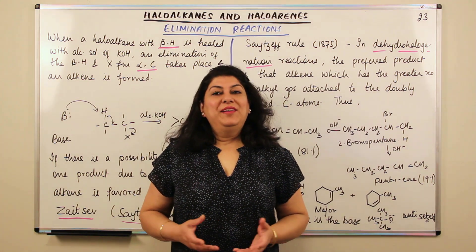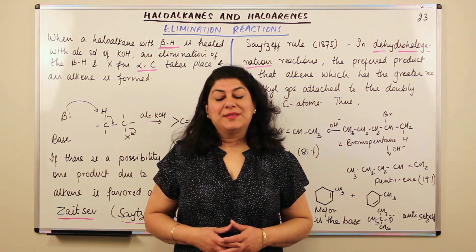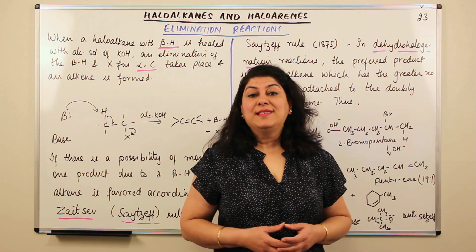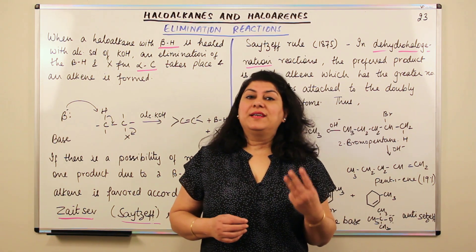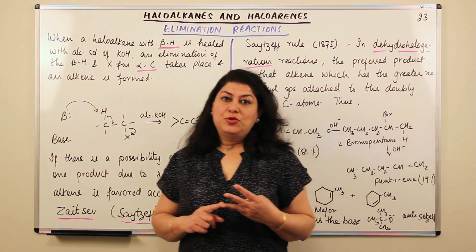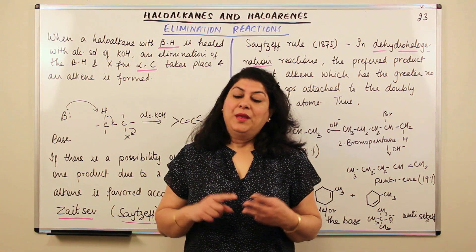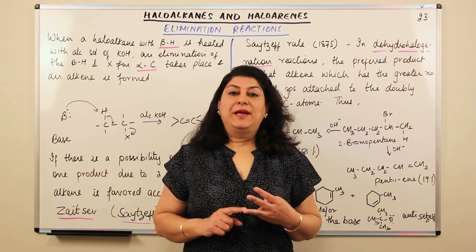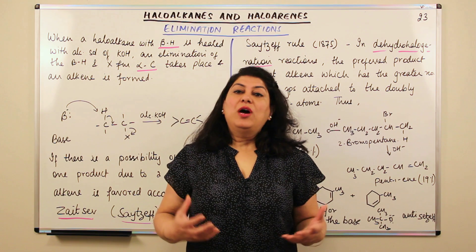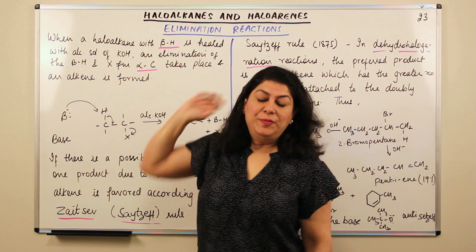Hello, I'm Seema and welcome to part 23 of the chapter haloalkanes and haloarenes. We have been discussing the various types of chemical reactions of haloalkanes and haloarenes. There are three categories: nucleophilic substitution reaction, elimination reaction, and reaction with metals. I have completely described nucleophilic reactions in the past few videos, so now we will come to elimination reactions.